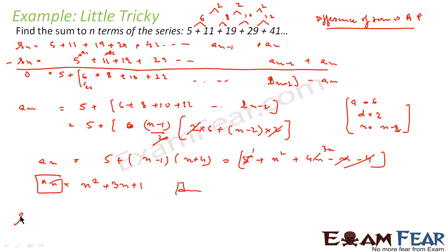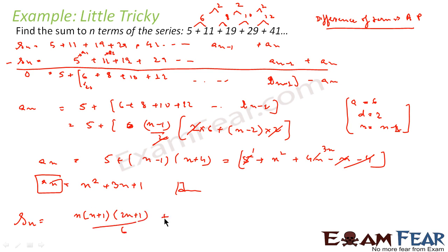Now to find Sn, the sum of n terms, since an = n² + 3n + 1, we use the standard summation formulas: Sn = Σn² + 3Σn + Σ1 = n(n+1)(2n+1)/6 + 3·n(n+1)/2 + n. This will be the value of Sn.